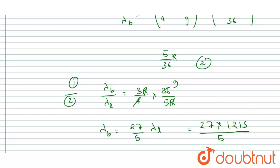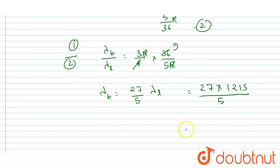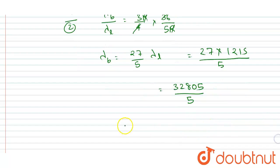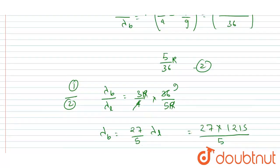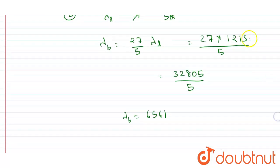If you solve this, you will get 32805 by 5, and if you further solve it, you will get λ_b equal to 6561. If you see, the unit of this was Angstrom, so the unit of this will also be the same.